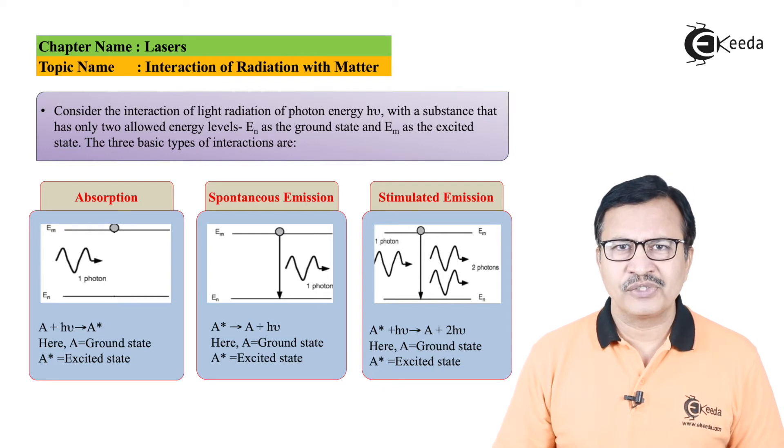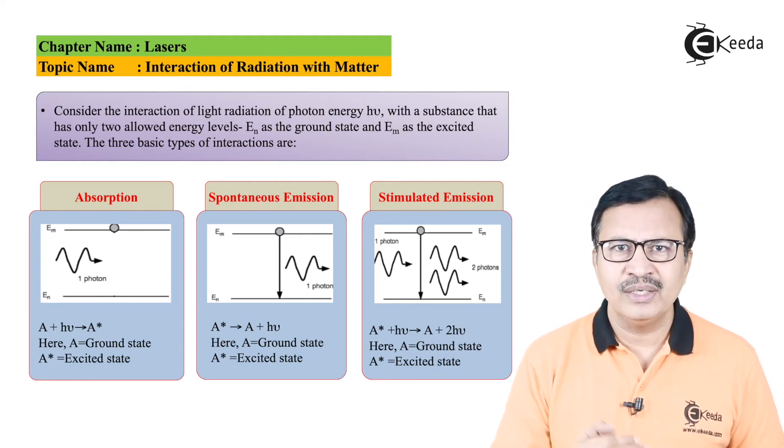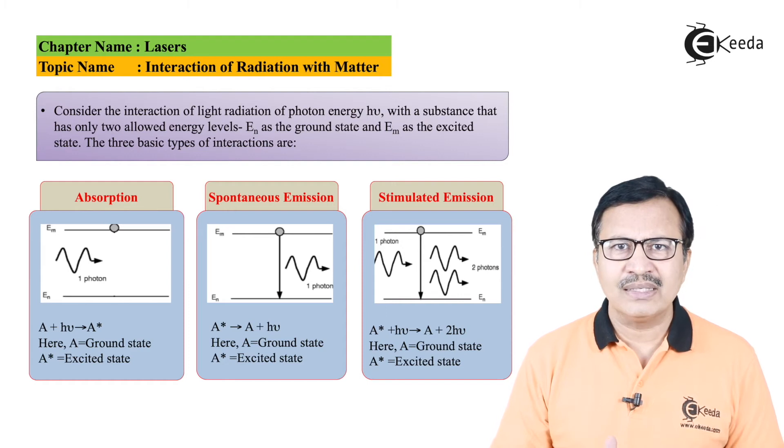And this can be represented by a very simple expression: A* = hν + A. A* represents an atom in the excited state will give rise to hν plus A. hν is the photon that will be released during this spontaneous emission.